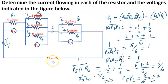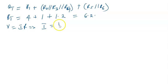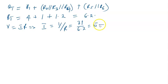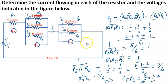The voltage is 31 volts. To find i1, we use Ohm's law: v = ir, so i = v/r. That gives i1 = 31 / 6.2 = 5 amps. So my total current i1 is 5 amps.